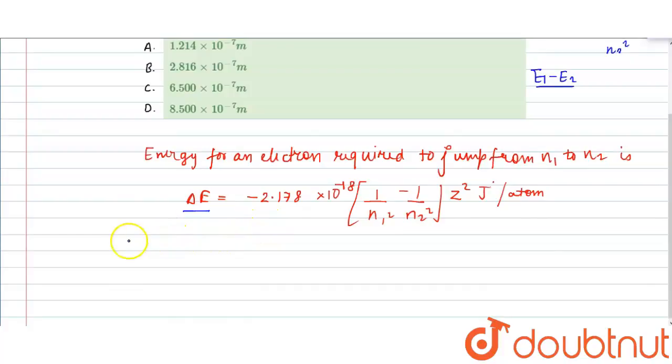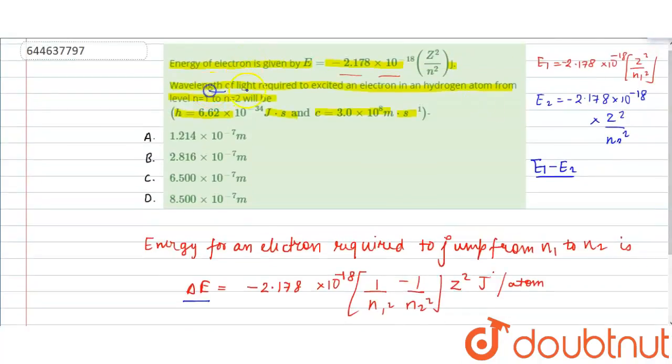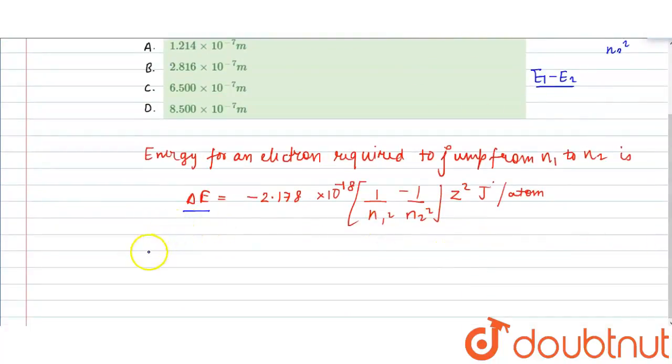We also know that wavelength of light required to excite an electron - energy is also given by E equals hc by lambda. This is the energy of light of wavelength lambda.